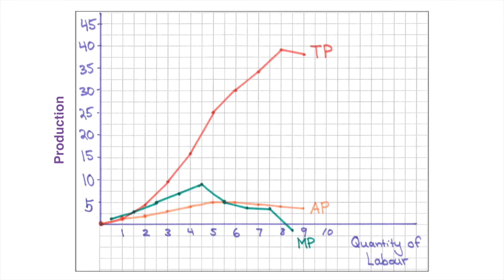I want to draw your attention to two specific points related to the marginal product curve. First is the addition of the fifth worker, who is able to increase total production and thus marginal production significantly. However, beyond this point, the employment of additional labour causes additional returns to decrease. Marginal returns are still positive up until we employ the ninth worker, who is now having an adverse impact on production, causing it to decrease. Thus, we can see that this diagram can be broken into three distinct phases: increasing marginal returns, decreasing marginal returns, and negative marginal returns.